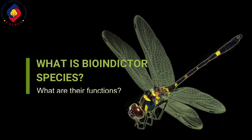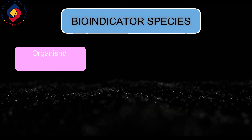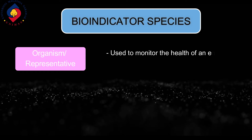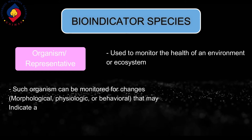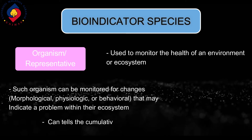What is a bioindicator species and what are their functions? A bioindicator species is an organism or representative that can be used to monitor the health of an environment or ecosystem. Such organisms can be monitored for changes such as morphological, physiologic, or behavioral changes that may indicate a problem within their ecosystem. Bioindicator species can also tell the cumulative effects of different pollutants in ecosystems.